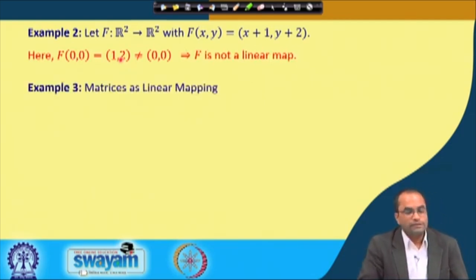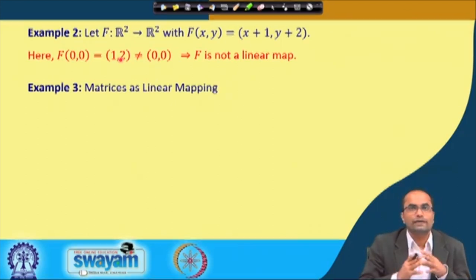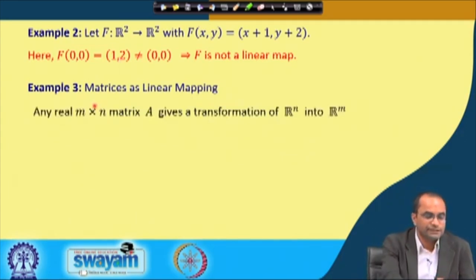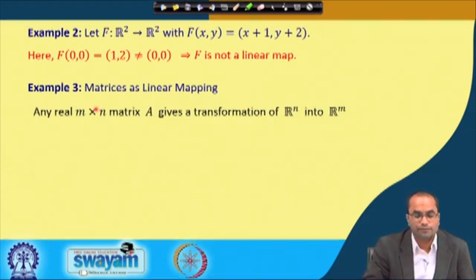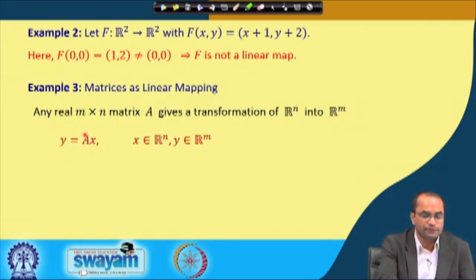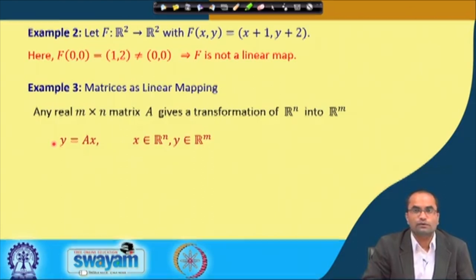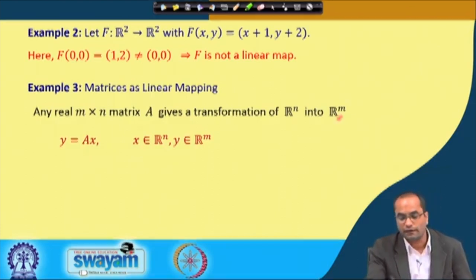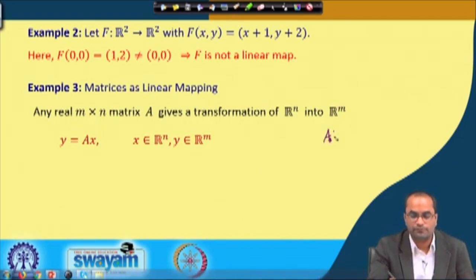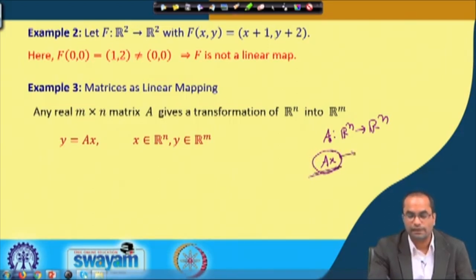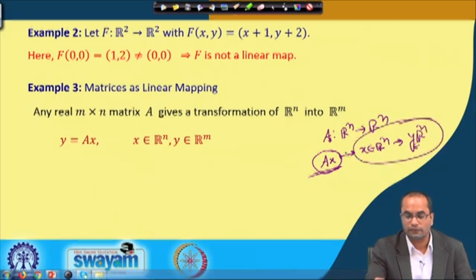Another very important example: matrices are also linear maps. We take any m×n matrix A as a transformation from Rⁿ to Rᵐ by the rule that if we multiply A by x, where x is an element from Rⁿ, we get an element in Rᵐ. So A acts as a map from Rⁿ to Rᵐ, and our function is A·x.